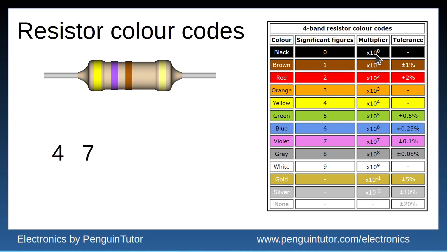So if it was black then it's 10 to the power zero so you don't add any zeros, the value would just be 47. In this case the band is brown which is multiplied by 10 to the power 1 and this adds one zero onto the end, so that gives us 470 ohms.